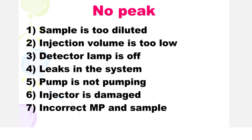Friends, sometimes you have observed there is no peak at all in your analysis. No peak is due to the following reasons: sample is too diluted, injection volume is too low, detector lamp is off, leaks in the system, pump is not pumping, injector is damaged, and incorrect mobile phase and sample.